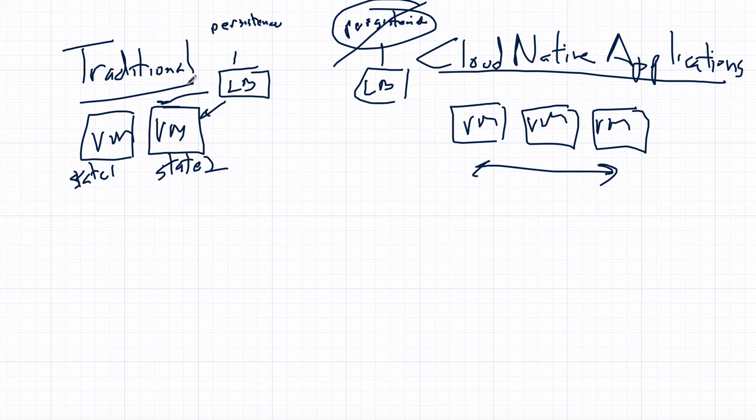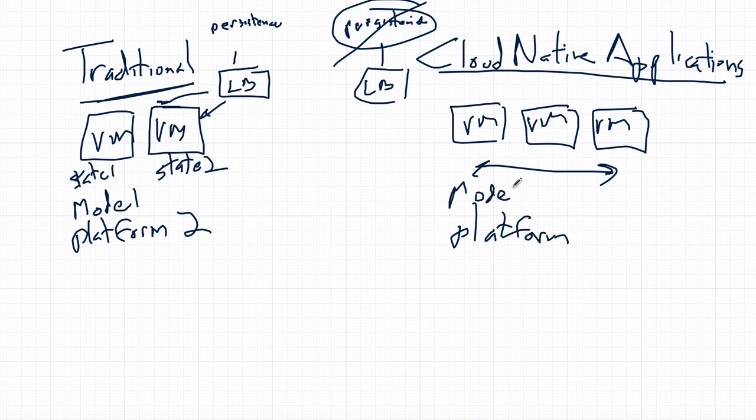But, at least in the enterprise, most of our applications are still traditionally, it's still traditional applications. Other names for traditional enterprise applications are sometimes referred to as mode one or platform two. So, first platform or a second platform or a platform two. First platform is mainframe. Second platform is client-server. And then the third platform is cloud-native. So, just some extra terminology for you and also referred to as mode two.